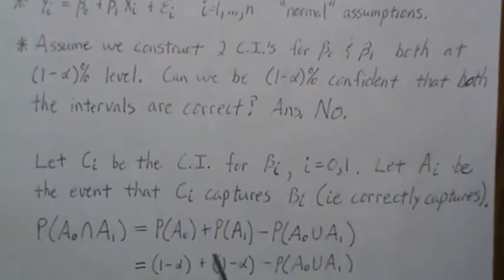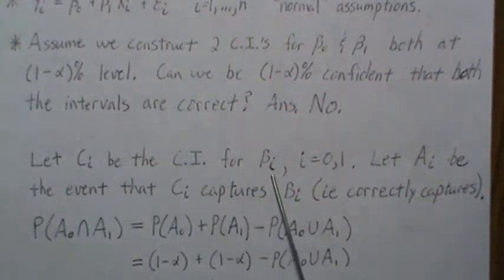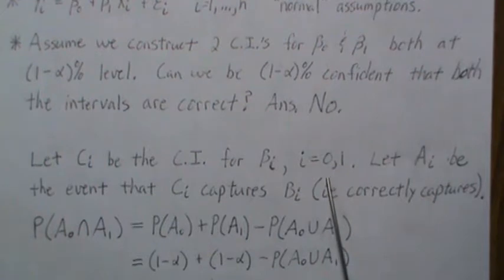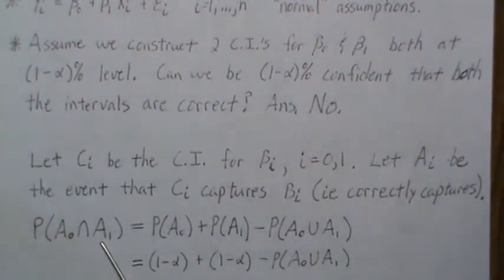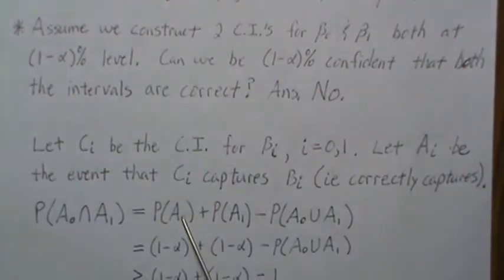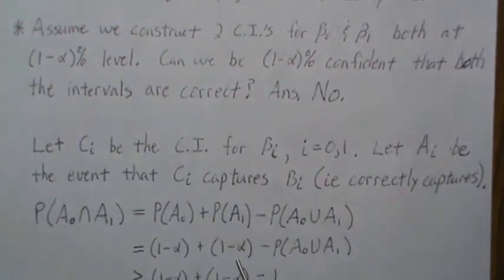Here's a quick little proof why. Let CI be the confidence interval for beta i, where i equals 0 or 1. Let Ai be the event that CI captures beta i, meaning it correctly captures it. We want to look at the probability that both our intervals capture the true parameter. This relationship is a well-known relationship: P(A₀∩A₁) = P(A₀) + P(A₁) - P(A₀∪A₁). We know that the probability of each confidence interval conducted at the alpha level is 1 minus alpha.